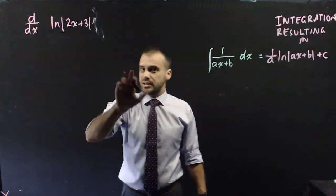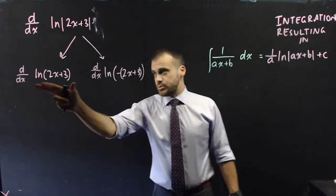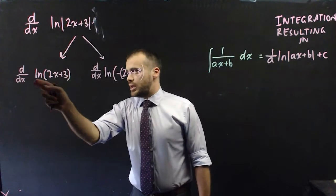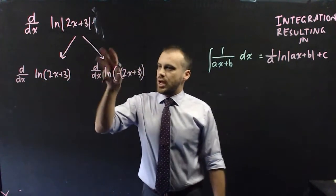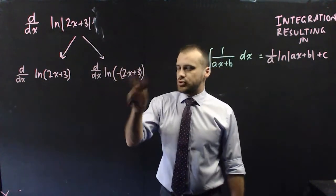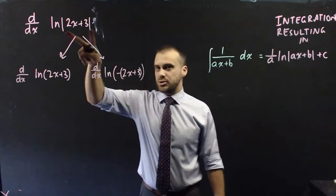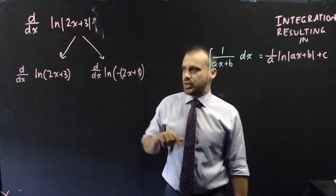Now, this tends to split into two cases. We have this case, which feels pretty straightforward. ln positive 2x plus 3. And this case here, ln negative 2x plus 3. Because if we have this absolute value here, we need to consider the positive case and the negative case.